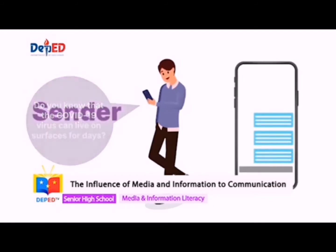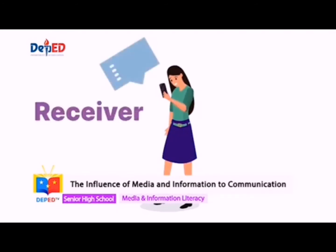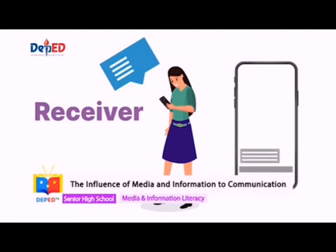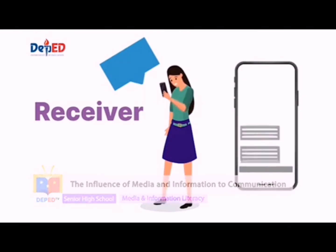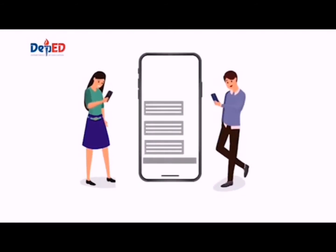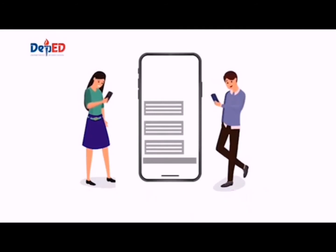The person to whom a message is directed is called the receiver or interpreter. To comprehend the information from the sender, the receiver must first receive and then decode or interpret it. The message or content is the information the sender wants to relay. Put together the sender, receiver, and message, and you have the communication process at its most basic.